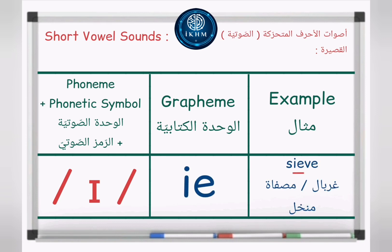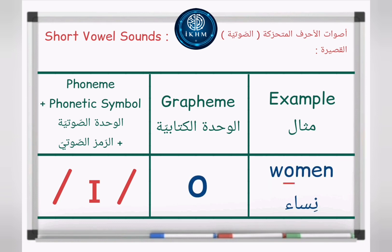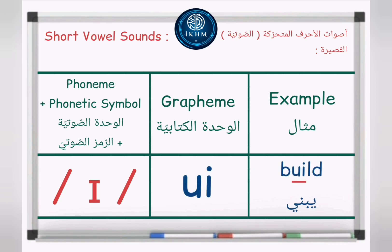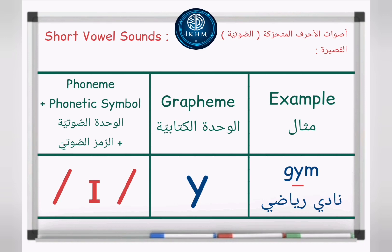Grapheme: letters I-E. Example — sieve, /ɪ/, sieve. Grapheme: letter O. Example — women, /ɪ/, women. Grapheme: letter U. Example — busy, /ɪ/, busy. Grapheme: letters U-I. Example — build, /ɪ/, build. Grapheme: letter Y. Example — gym, /ɪ/, gym.